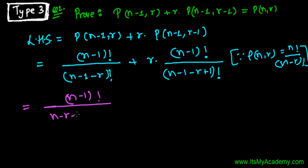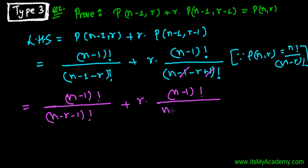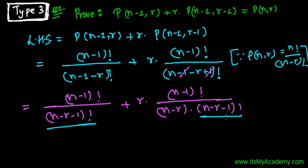So we have n minus 1 factorial divided by n minus r minus 1 factorial, plus r times n minus 1 factorial divided by n minus r factorial. Now for the n minus r factorial term, I'll expand it as n minus r times n minus r minus 1 factorial. This gives us a common factor of n minus r minus 1 factorial in both terms, which is good news.